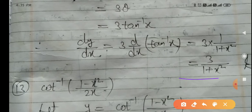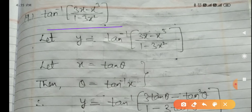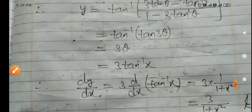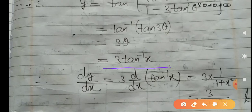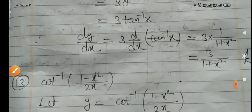The given expression tan inverse (3x minus x³)/(1 minus 3x²) was complicated, but by substitution it became 3 tan inverse x — which is easy to differentiate. So by substitution we converted the given expression, and differentiating 3 tan inverse x means we are differentiating the given expression. The final answer is 3/(1 plus x²).